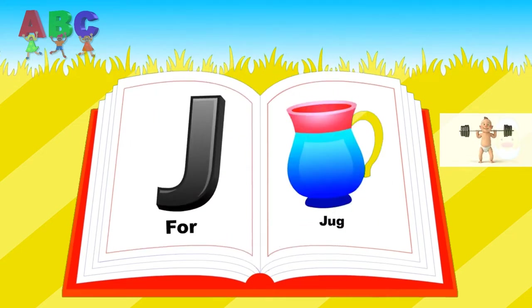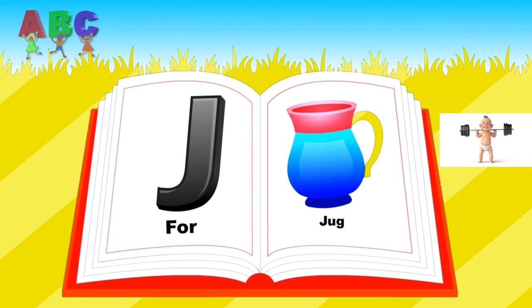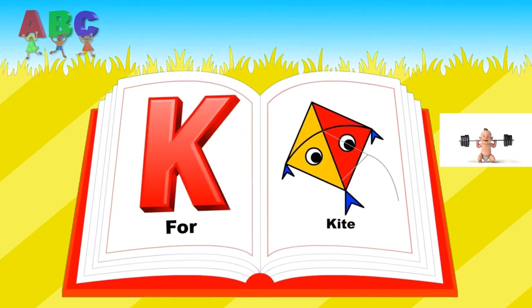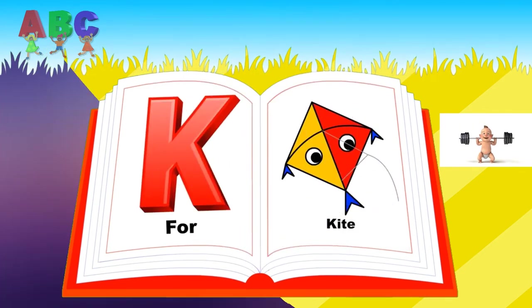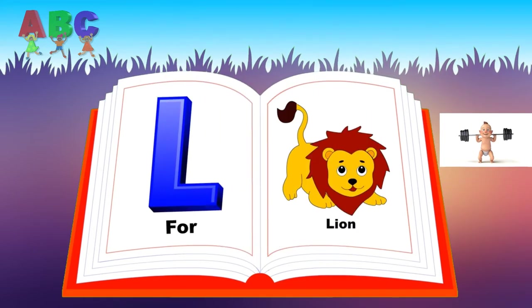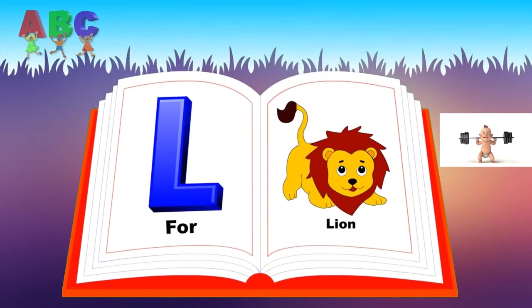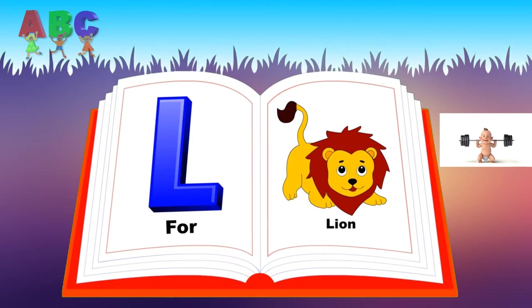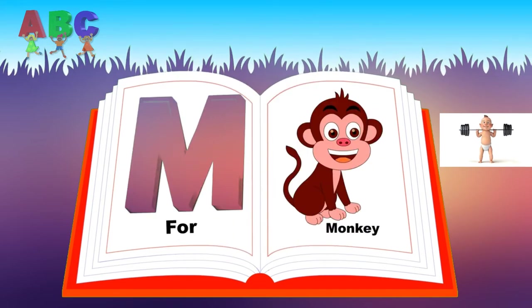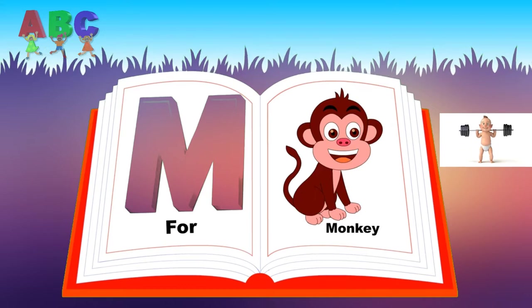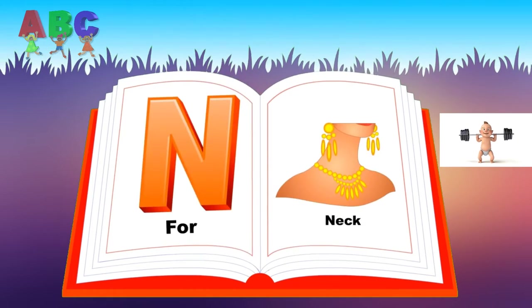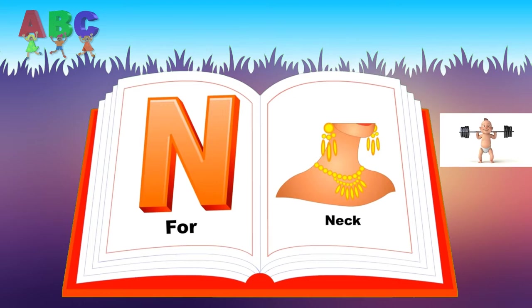J for Jug. K for Kite. L for Lion. M for Monkey. N for Neck.